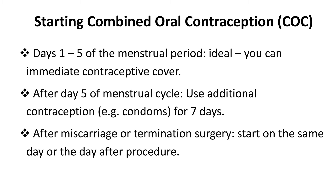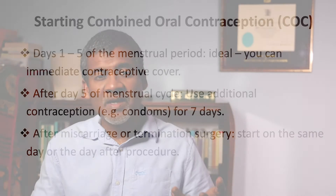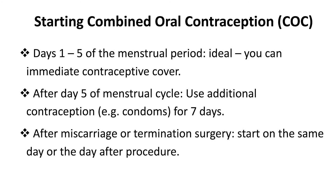Let's look at some practicalities. Question seven: how should you start the combined oral contraceptive pill? If you start the COC in the first five days of the menstrual period, you have immediate contraceptive cover. If you start after five days, you will need additional contraception such as condoms for the next seven days. With surgical management of miscarriage or termination of pregnancy, the COC can be started on the same day as the procedure, or the following day if the patient has postoperative nausea or vomiting.